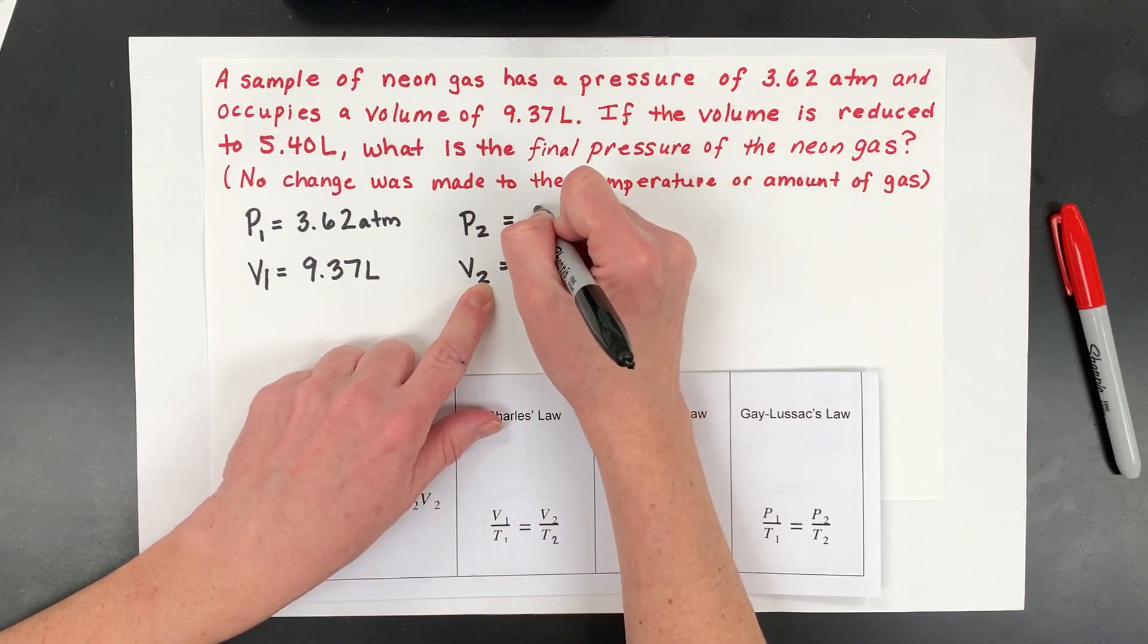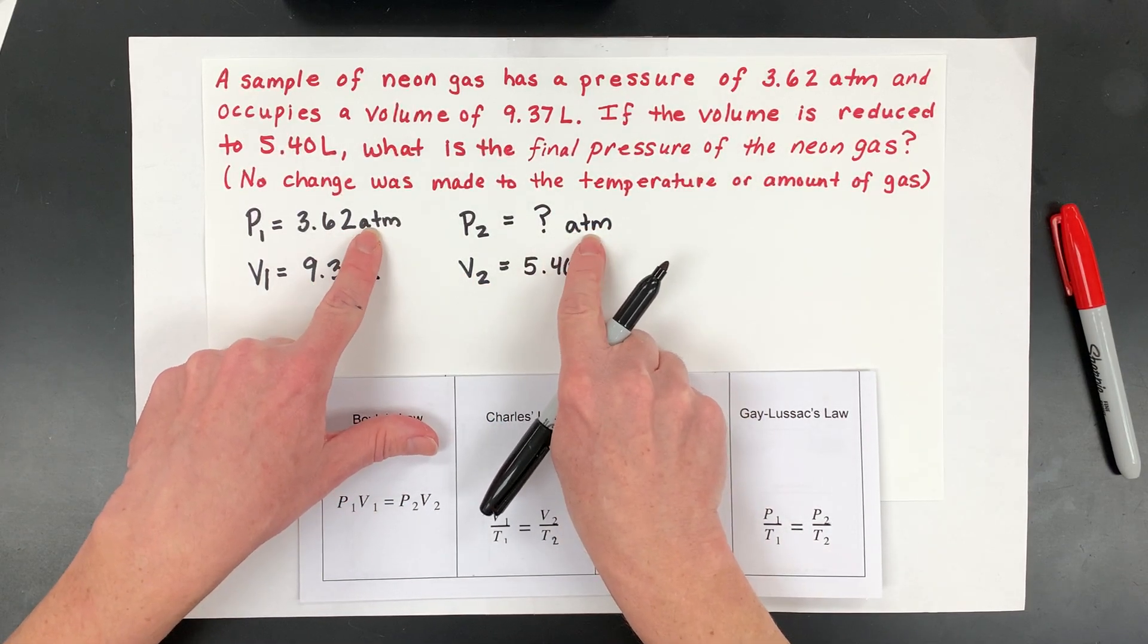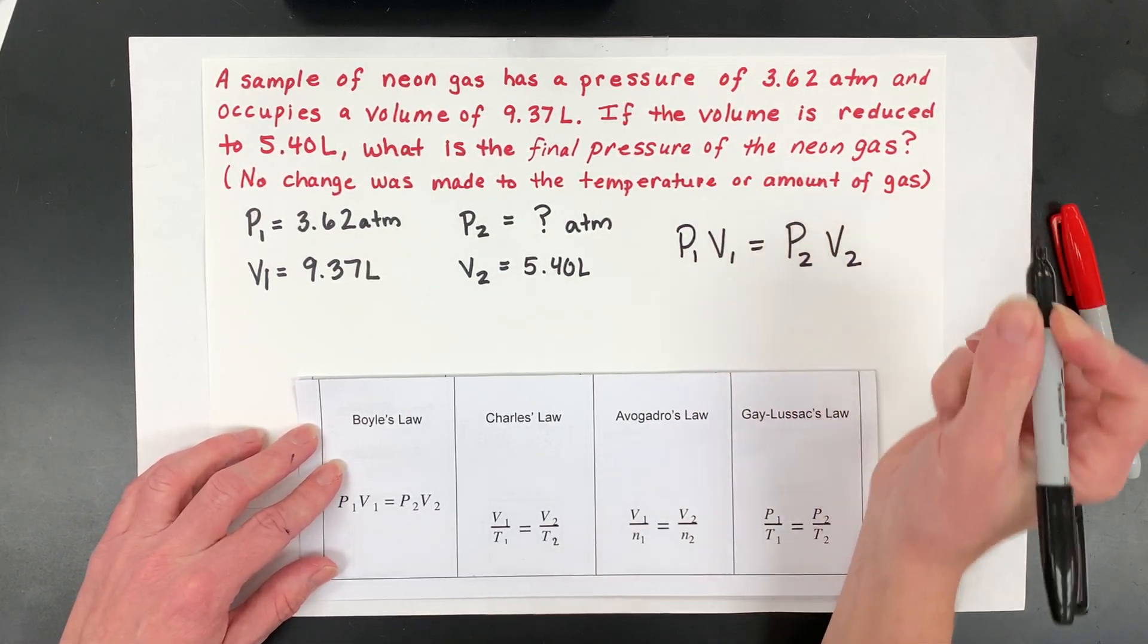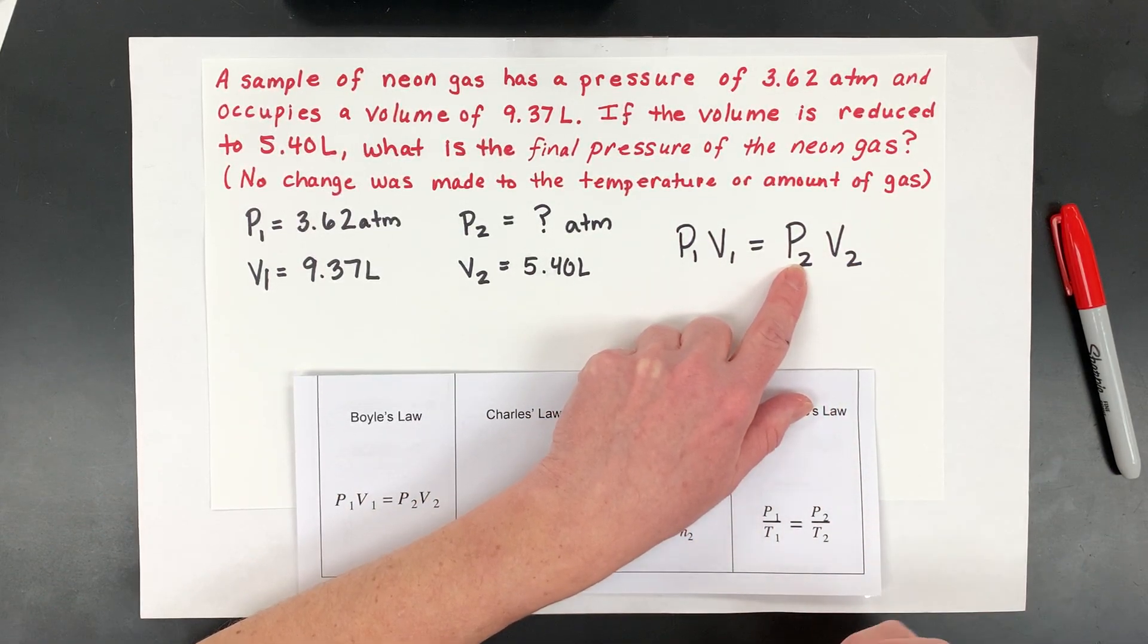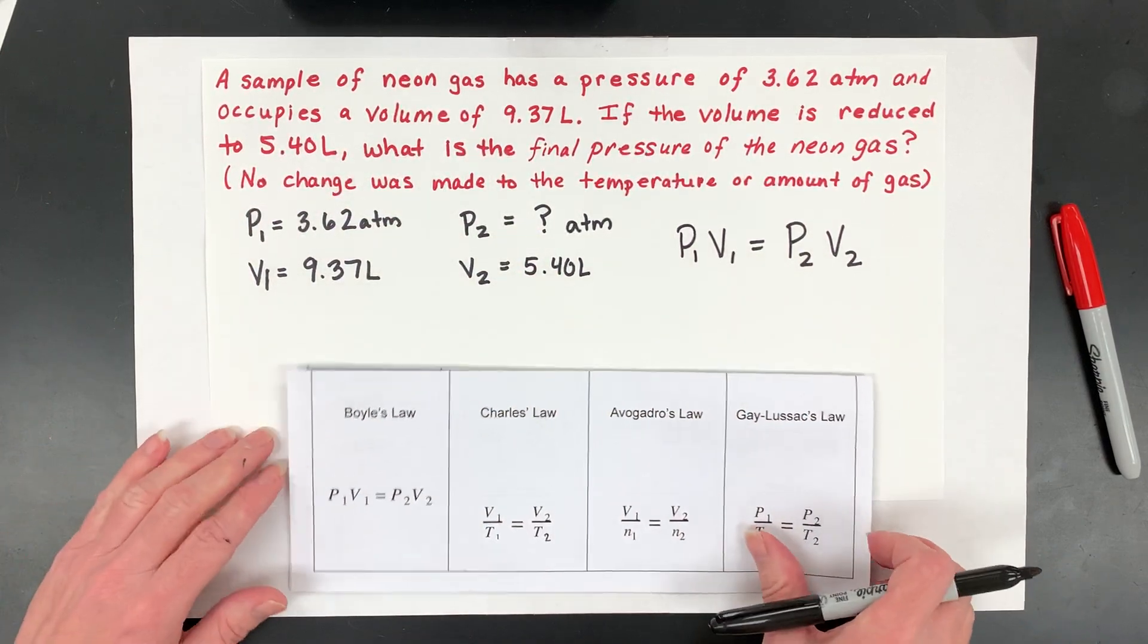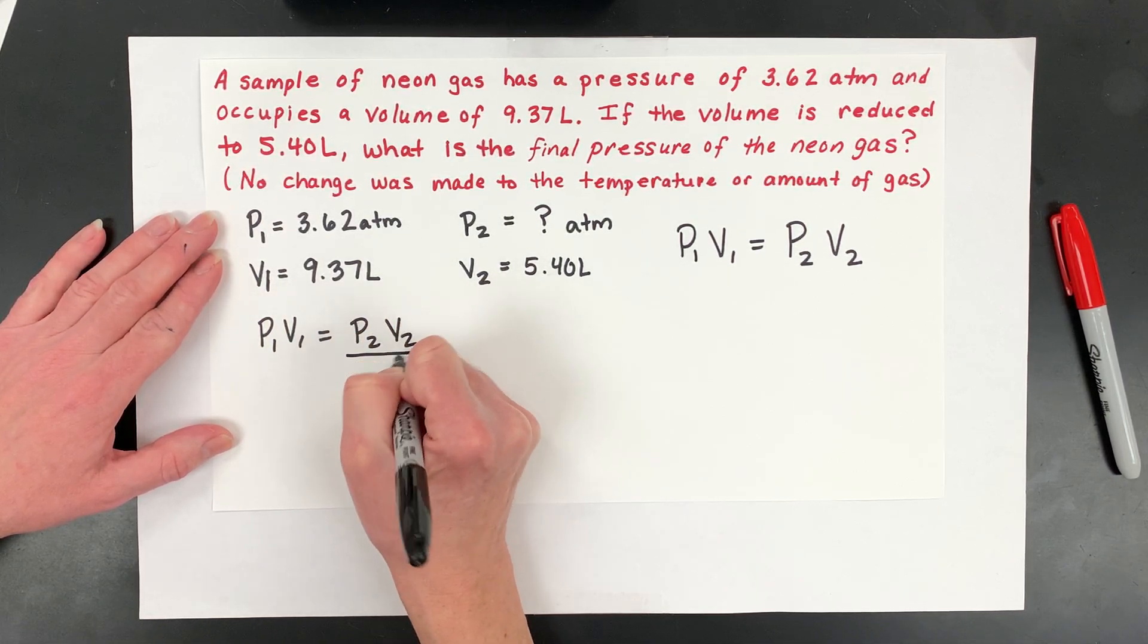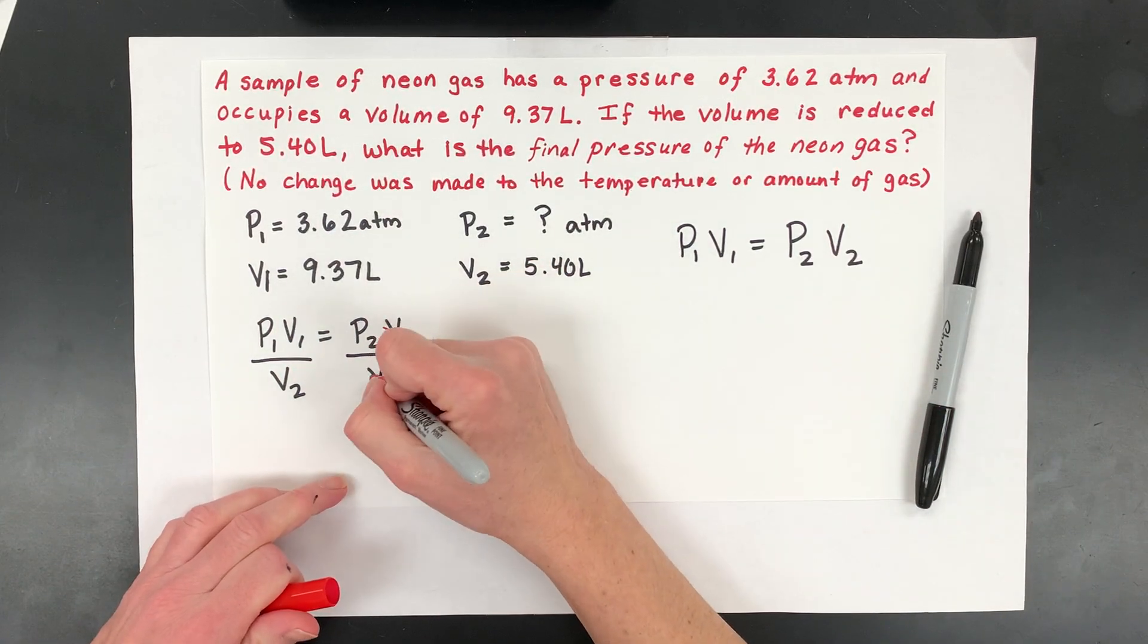I want to know this new or this final, sometimes they'll use f's, this new final pressure, and I do need to have the same units. The pressure needs to be the same units, in this case atm, and the volume has to be the same units. Then you can use this P1V1 equals P2V2 equation called Boyle's law, that relationship that you have. Now, I want to isolate for just P2, so before I do anything, I'm going to add those variables in. I want to get that P2 all by itself, so what I'm going to do is divide both sides.